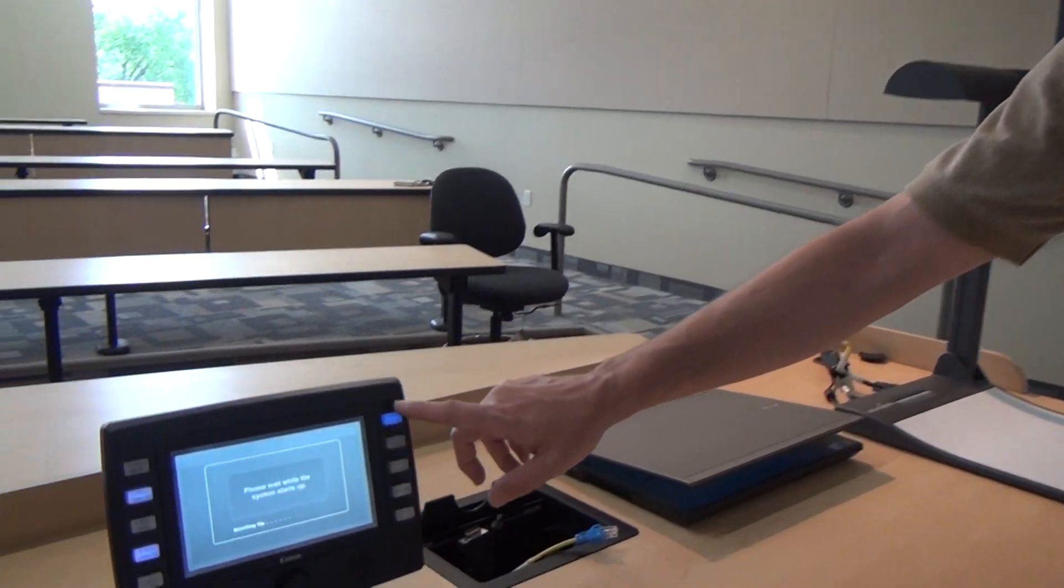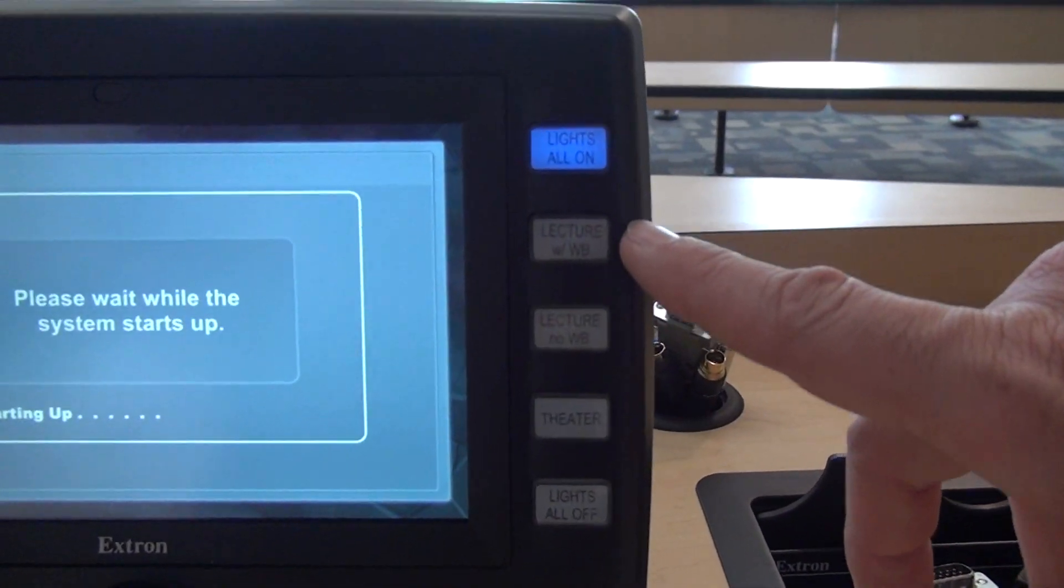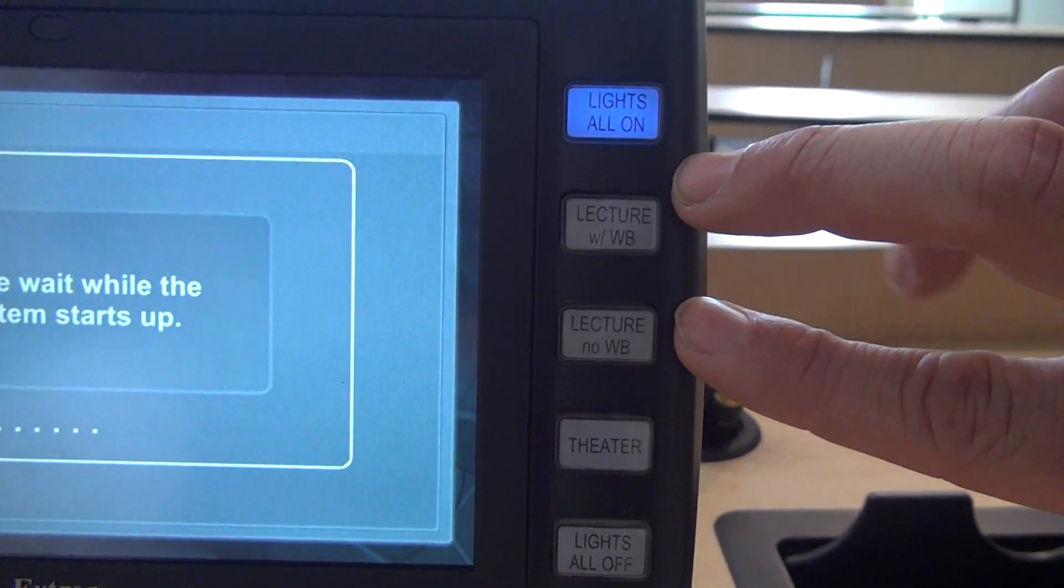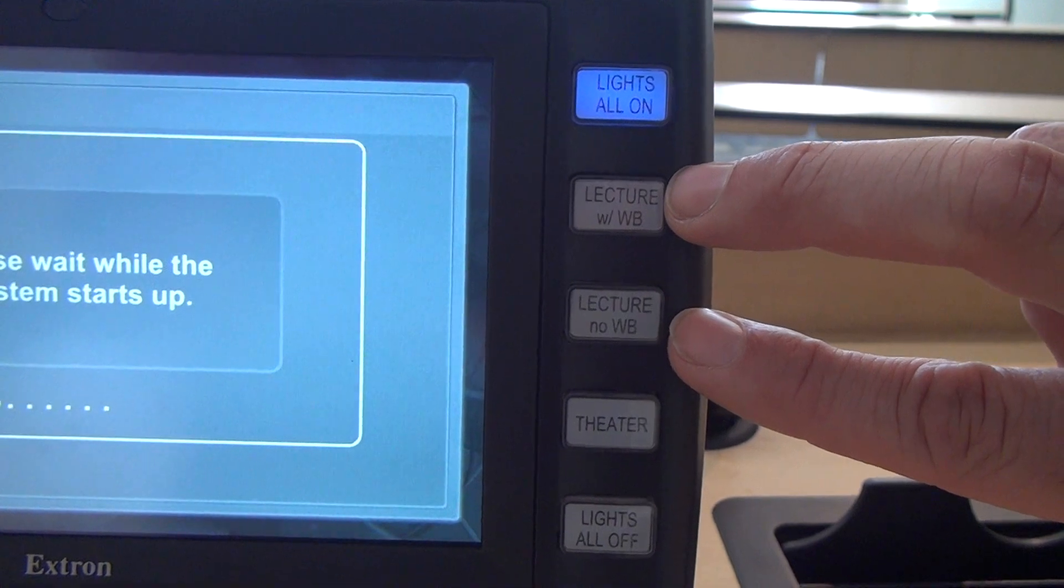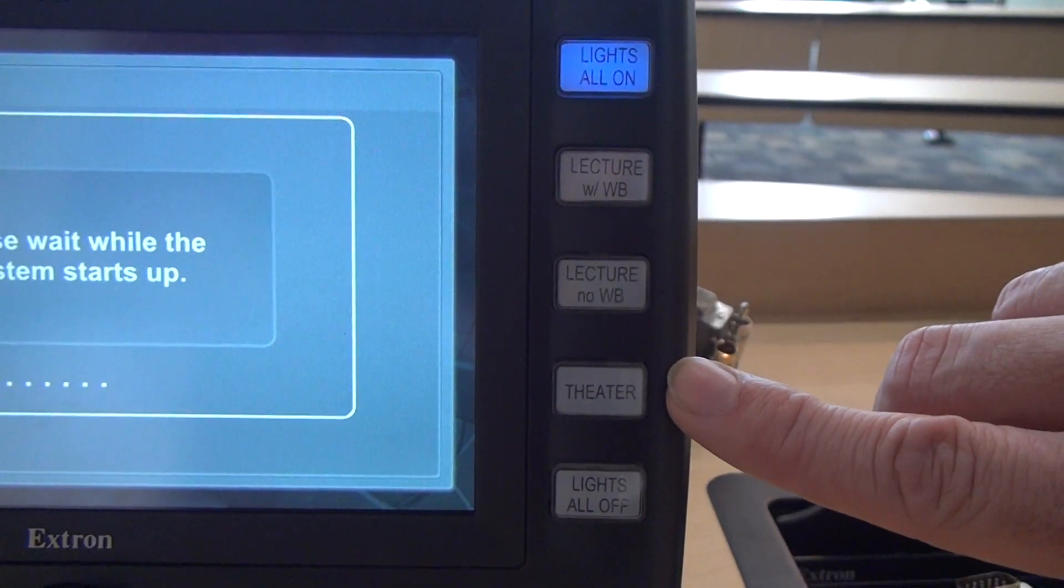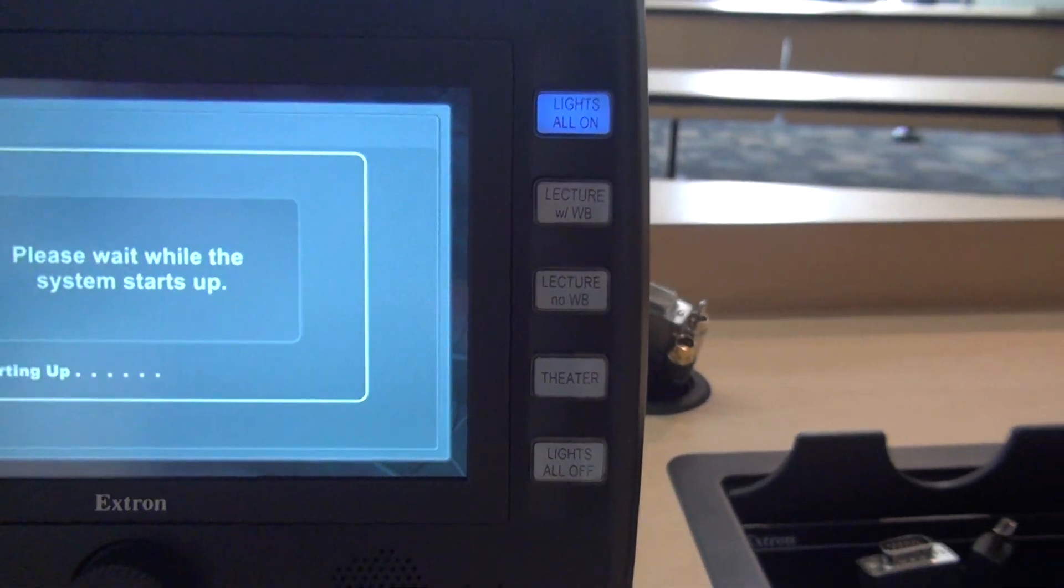While we're waiting for that, on the right hand side of our touch panel we have our five lighting presets: lights all on, two whiteboard or two lecture modes with the whiteboard and without the whiteboard lights, a theater mode that will dim the lights, and then a lights all off selection.